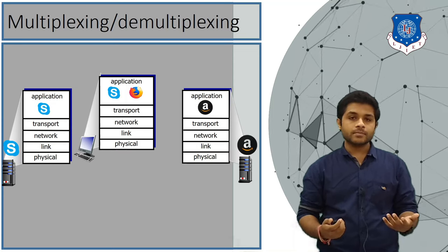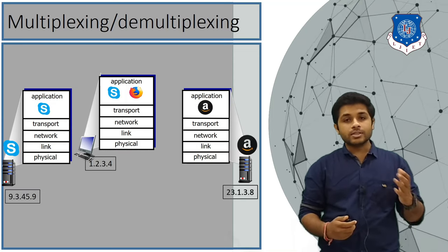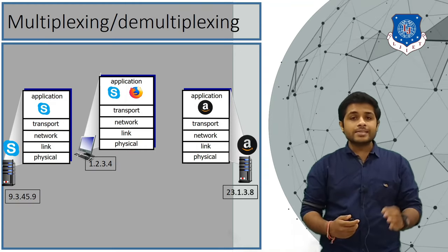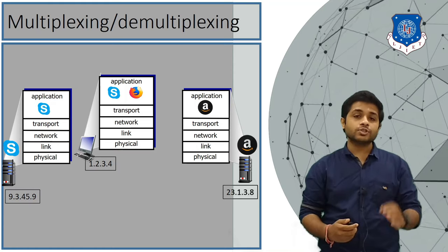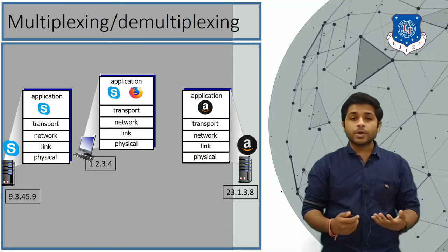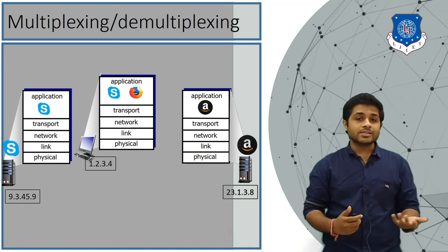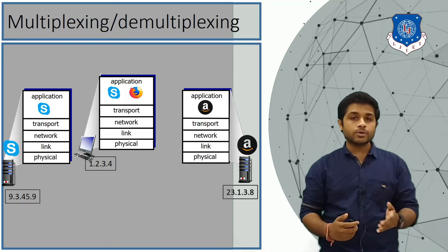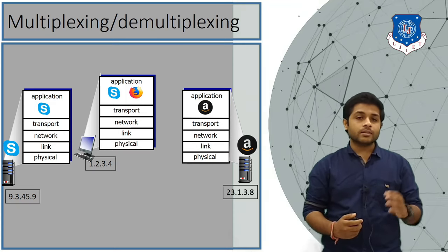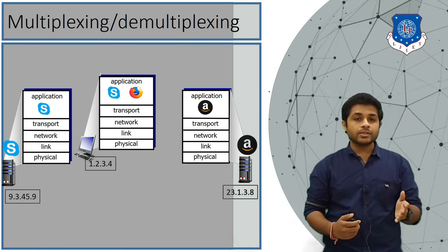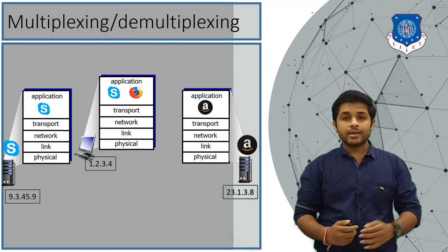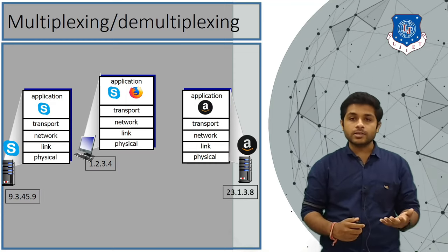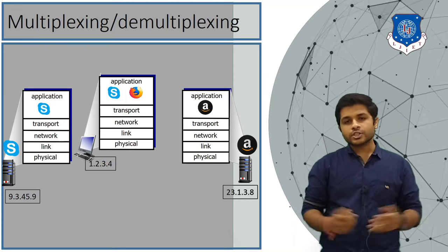You can see that these devices have IP addresses. On the internet, it is necessary for all devices to have a unique IP address, because without an IP address these devices cannot communicate. The IP address of your device is 1.2.3.4, the IP address of the Skype server is 9.3.45.9, and the IP address of the Amazon server is 23.1.3.8.